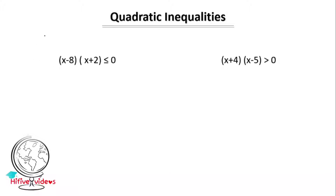This is of the form x² plus bx plus c less than or equal to or greater than or equal to 0. It's not just written in factored form — if you multiply x minus 8 into x plus 2, you get x² minus 6x minus 16, and then less than or equal to 0 is less than or equal to 0.